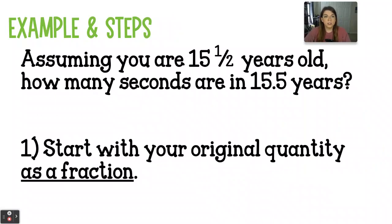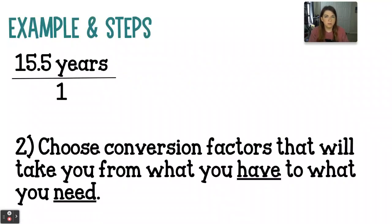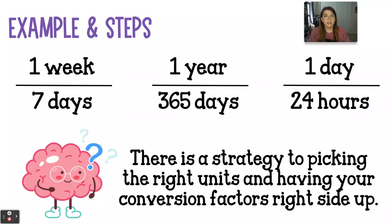I have an example to walk us through. Let's assume that you're 15 and a half years old, and the question is: how many seconds old are you? We're going to start with our original quantity and write it out as a fraction, because it's a little bit easier to visualize what's going on. We're going to take that 15.5 years and put it over one. Then we're going to choose the conversion factors that take us from what we have — years — to what we need — seconds. There are a lot of conversion factors that revolve around time: one week and seven days, a year and 365 days, one day is 24 hours, 60 seconds in a minute, and so on.